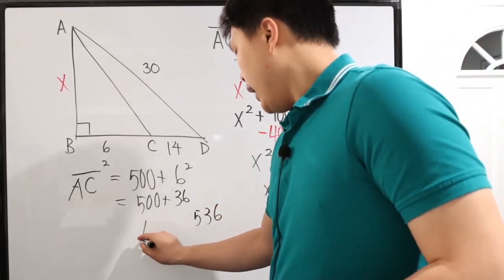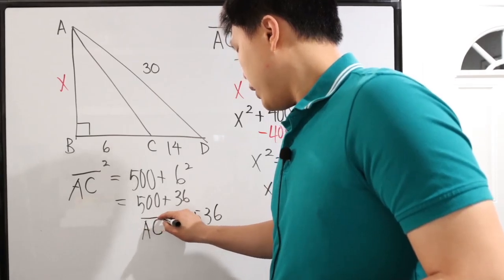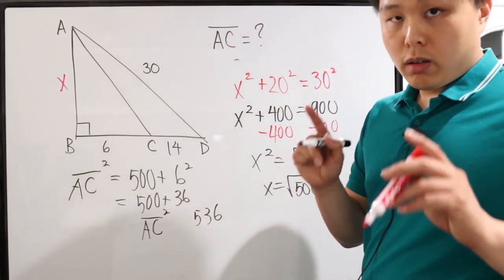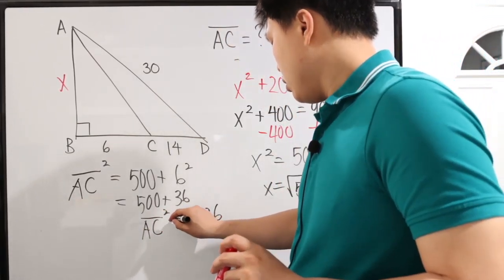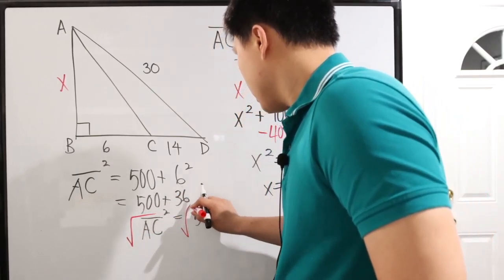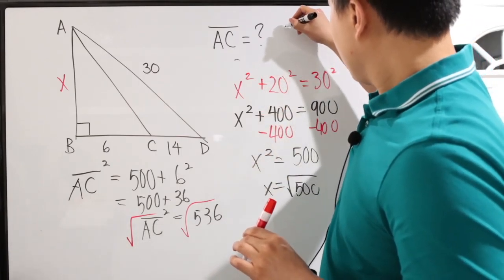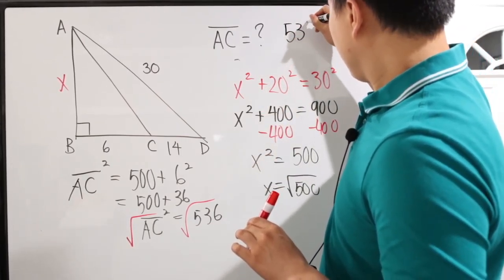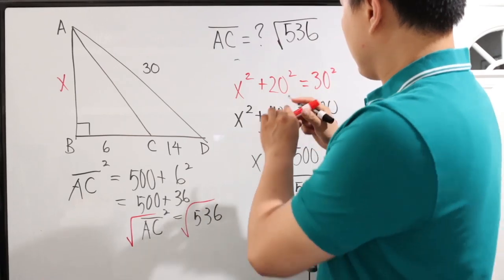right? So that's AC, the length of AC squared. Okay, we're trying to find AC. So what we're going to do is we're just going to square root both sides. So AC right here is just basically square root of 536.